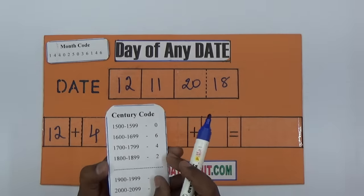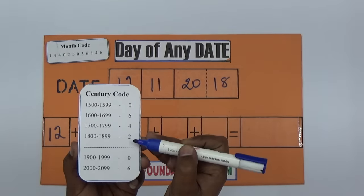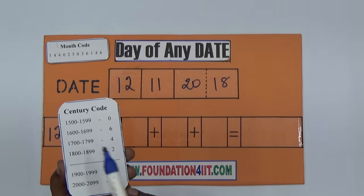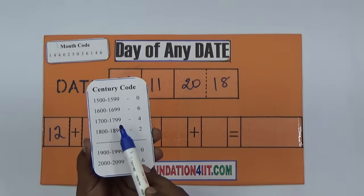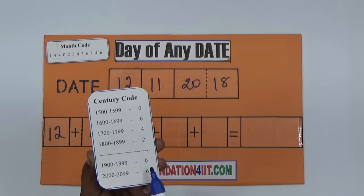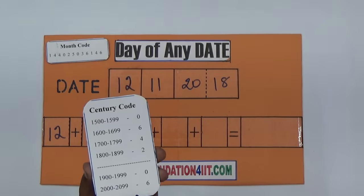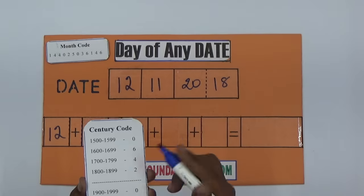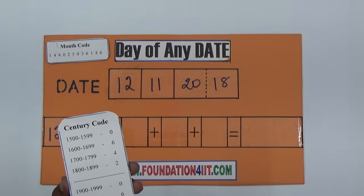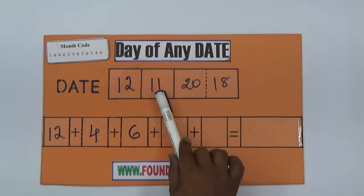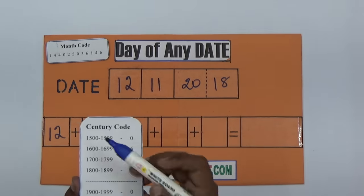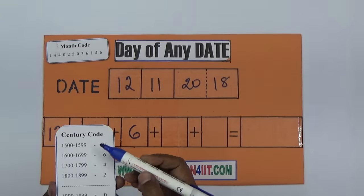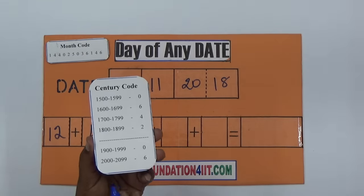Now I'll show you the century code. It's very easy to remember - just 0, 6, 4, 2. 1500 to 1599 is 0. 1600 to 1699 is 6. 1700 to 1799 is 4. 1800 to 1899 is 2. 1900 to 1999 is 6. 2000 to 2099 is 6. 2100 to 2199 is 4. So 0, 6, 4, 2 repeats.